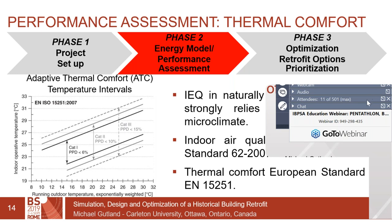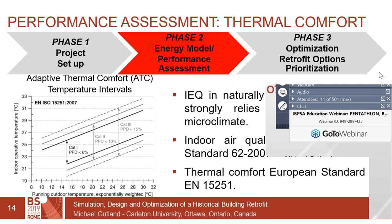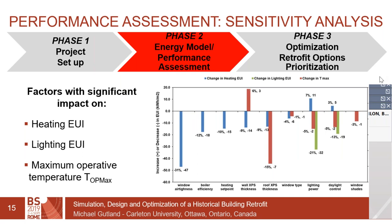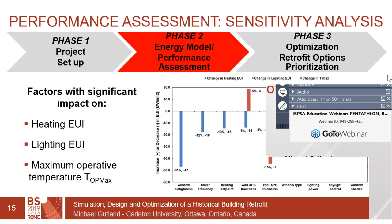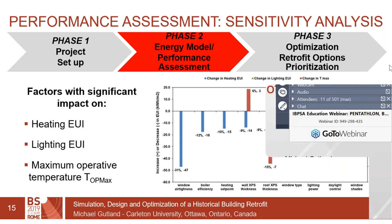An adaptive thermal comfort model was used, which states that when outdoor temperature is higher, occupants are willing to tolerate a higher indoor operative temperature. Before designing an optimized retrofit model, we performed a one-factor-at-a-time sensitivity analysis to determine which model parameters had the greatest impact. Parameters included those related to the mechanical system, window construction, thermal insulation, and lighting. The impact on heating loads, lighting loads, and peak temperature inside the building was measured for each parameter change.